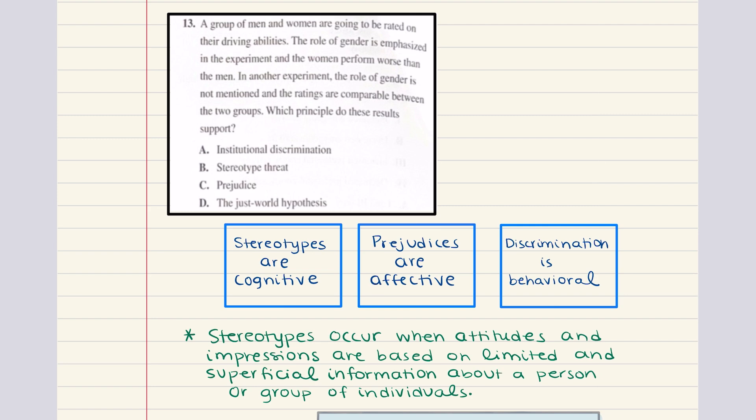we talked about an example where they had a woman take a mathematics exam in a group of men. And that woman performed worse based off of the fact that she was feeling the stereotype threat being in a room full of men when mathematics has been for a long time, a male dominating field. And we're seeing the same exact thing here just with driving abilities. And so the correct answer for 13 is going to be B.